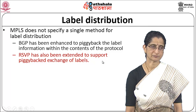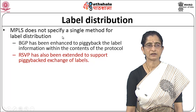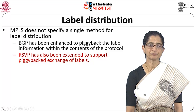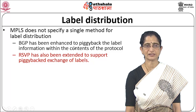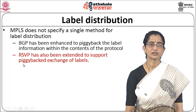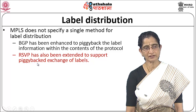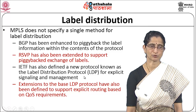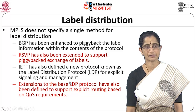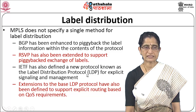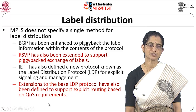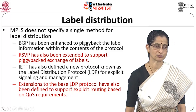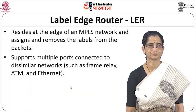MPLS has multiple methods for label distribution. BGP has been enhanced to carry label information. RSVP has also been extended to support exchange of labels. Additionally, there is the Label Distribution Protocol (LDP), used for explicit signaling and management in MPLS networks. LDP also has extensions to support explicit routing based on QoS requirements, providing strong QoS routing support as part of the MPLS protocol.